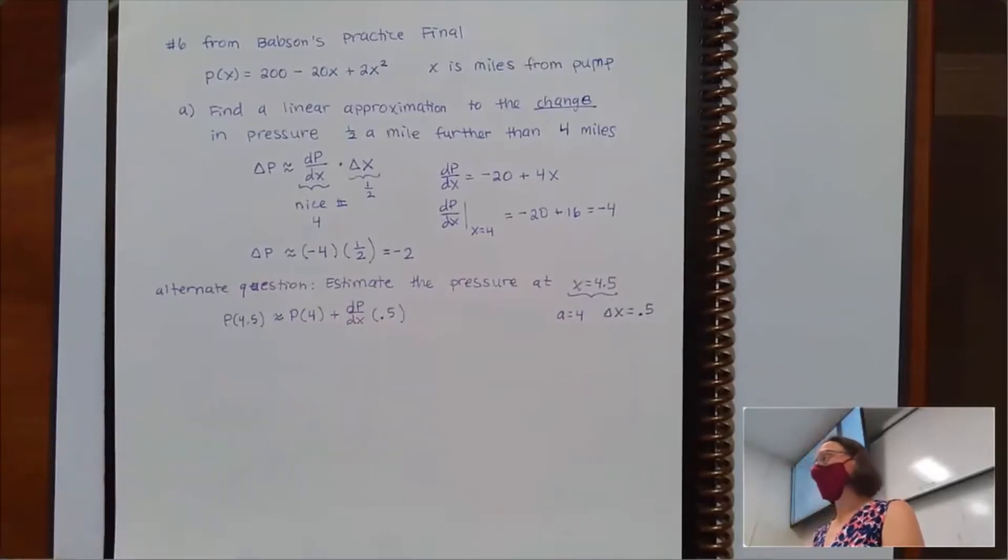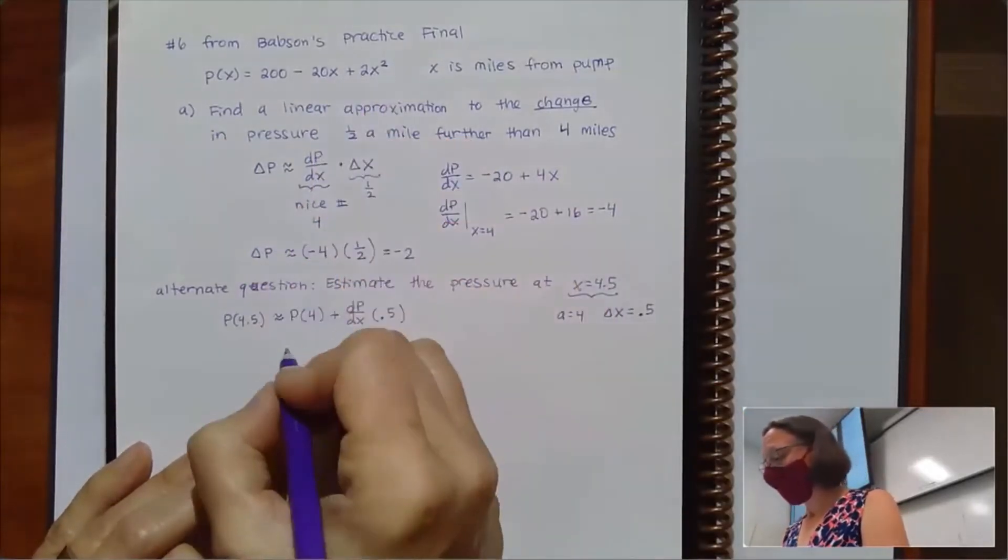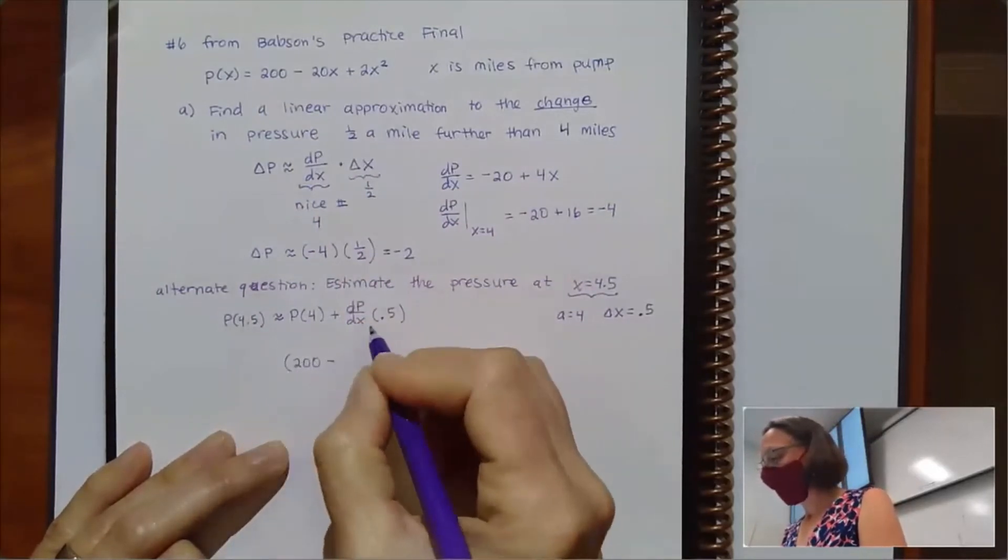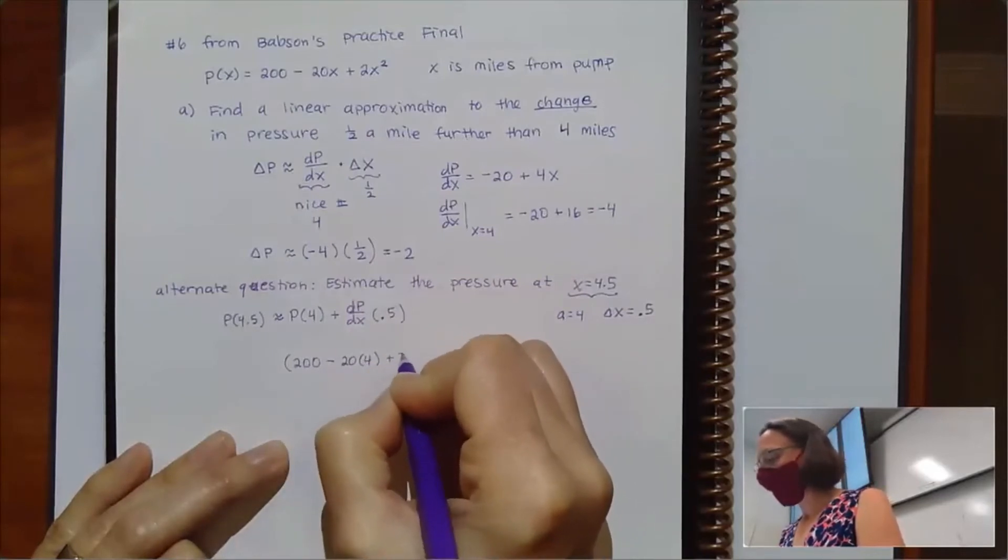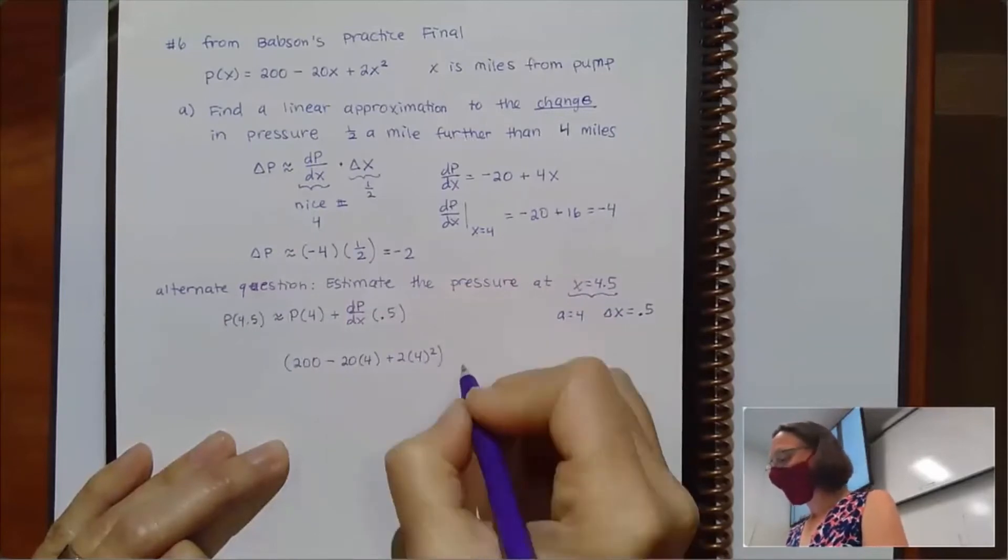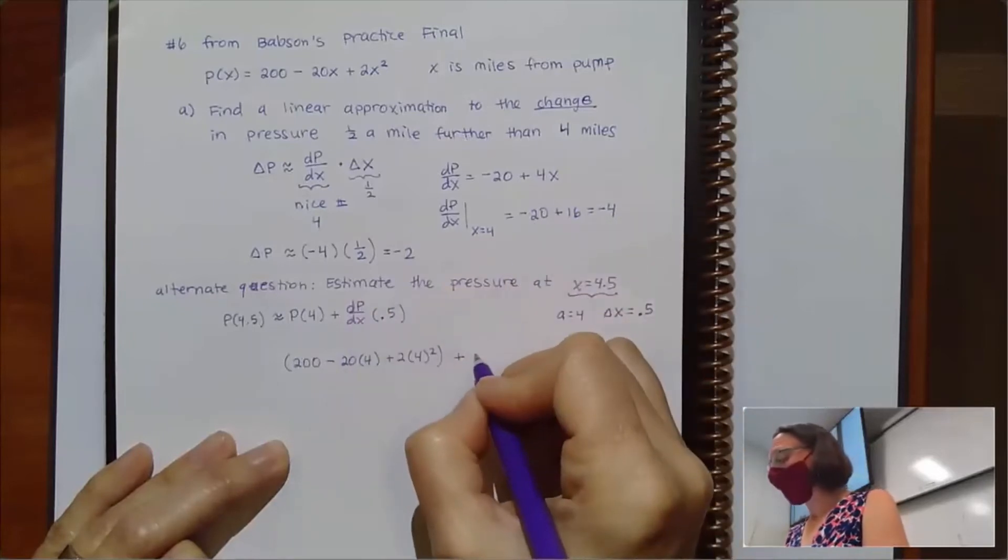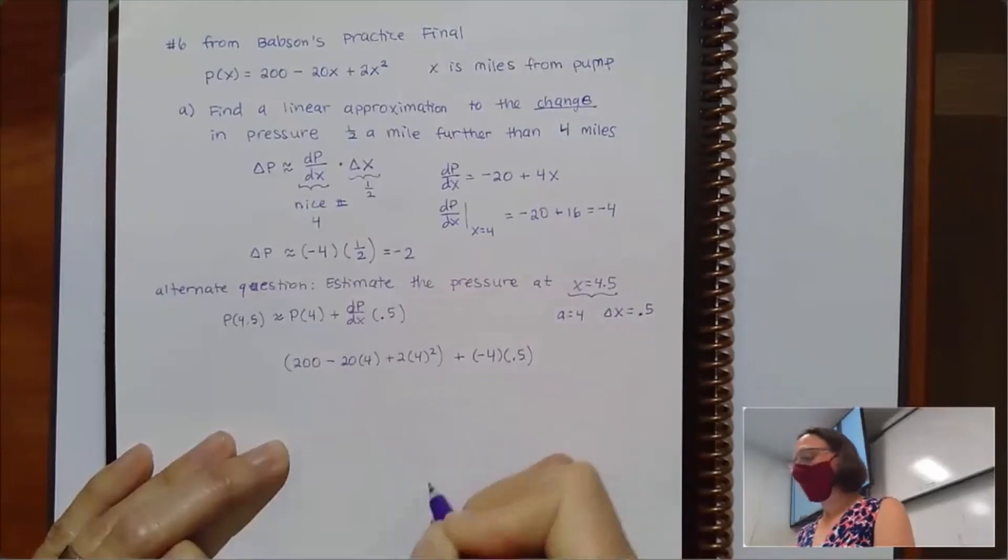Which is more how all of the textbook questions are set up. So we'd have to plug 4 into the original equation. So my pressure at 4 would look like 200 minus 20 times 4 plus 2 times 4 squared. And then we'd have this dp dx term, which we got to be negative 4 times that change in x of 0.5.